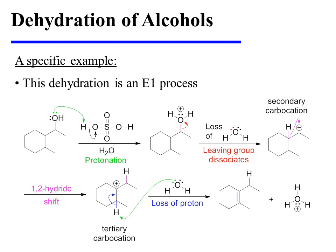This secondary carbocation is adjacent to a tertiary center, and a tertiary carbocation would be more stable. Consequently, a 1,2-hydride shift occurs, converting the secondary carbocation into a tertiary carbocation. Finally, water removes a proton from the carbocation intermediate, and as the carbon-hydrogen sigma bond fragments, those electrons collapse in between these two centers, creating the pi bond of an alkene.